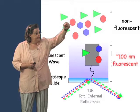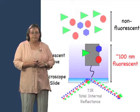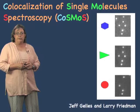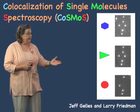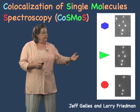Let's see how this looks. Imagine looking down on this surface at the molecules on it. We call this technique co-localization of single molecule spectroscopy, or COSMOS. This technique was pioneered by Jeff Gellis and his co-worker Larry Friedman at Brandeis University.